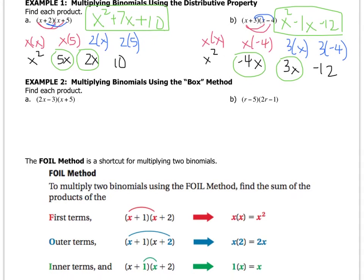Example 2 is a method called the box method. What you do is you take each part of the question and put it along either the side or the top of a box. So I'm going to do 2x and then minus 3. And this is going to be x and then plus 5. But I'm just going to write 5 because I don't need to write the plus. So I'm going to separate it.